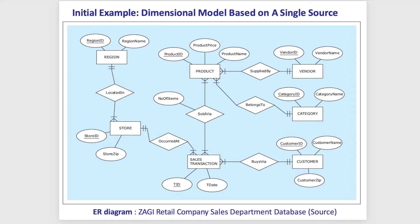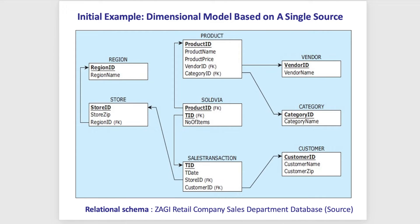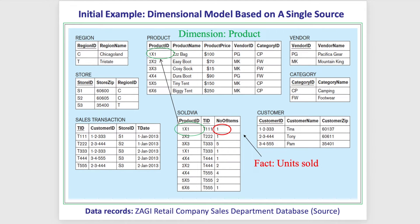Now let's go to the example of the Saggy DB that we have in our textbook. We are going to create a star schema for this example. I've put the ER diagram and also the relational schema here so we can better explain how to create the star schema. Here we have all the tables populated with data.